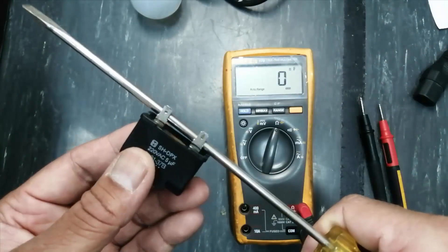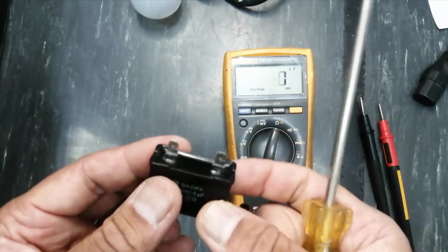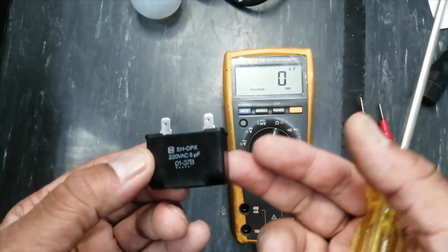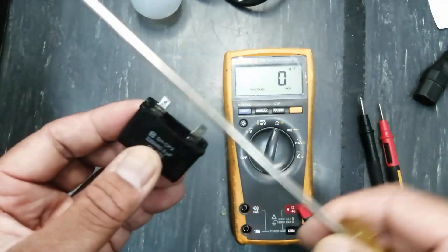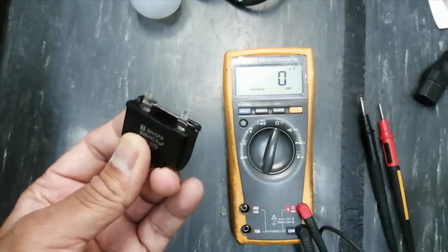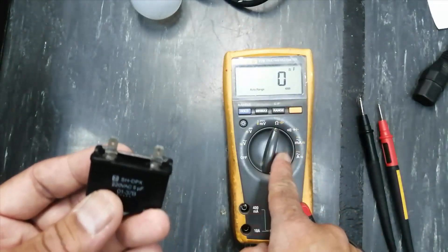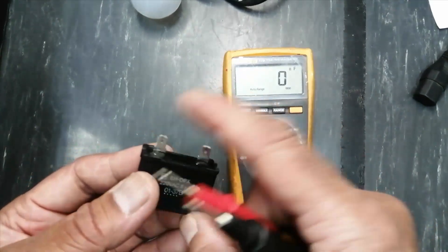So just make short to discharge it. Never connect the multimeter to the capacitor until you discharge it, and never touch your hand or body to the terminals of the capacitor.